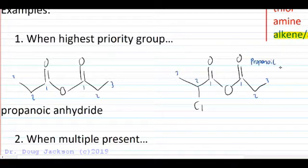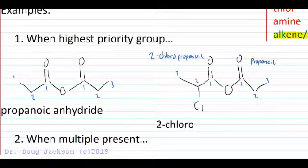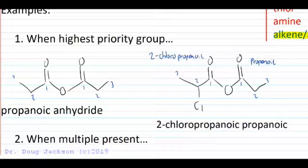But here we have a 2-chloropropanoic side. When we put the name together in alphabetical order for an unsymmetrical anhydride, the C comes before P, so we have a 2-chloropropanoic, second word, propanoic, third word, anhydride.